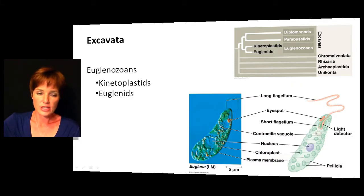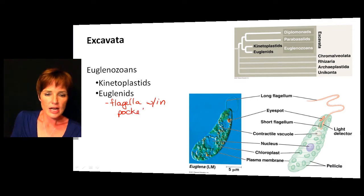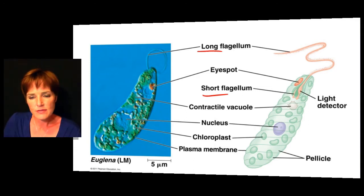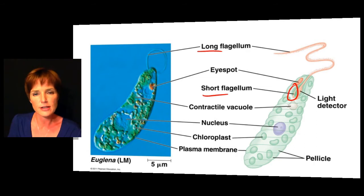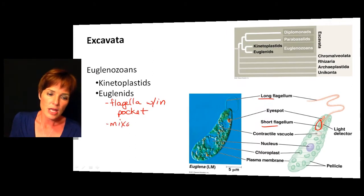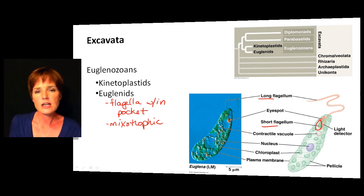Another group within the euglenozoans is called the euglenids, named very similarly to the overall grouping. These are unique because they have their flagella within a little pocket, and those flagella usually have one short one and one long one. It can be hard to see the short one in a microscope picture, but in this drawing you can see the very short flagella alongside the typical long flagella. These are mostly mixotrophic — meaning they can perform photosynthesis using photosynthetic plastids such as chloroplasts, but they also have the capability to be heterotrophic if sunlight is not available.